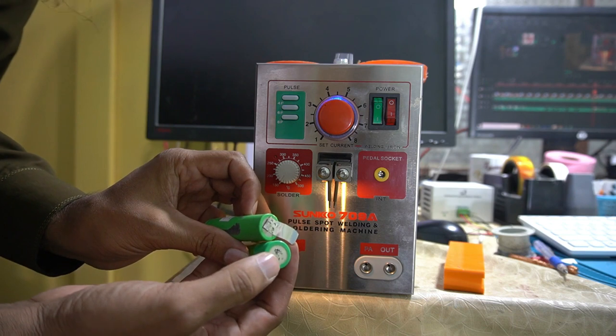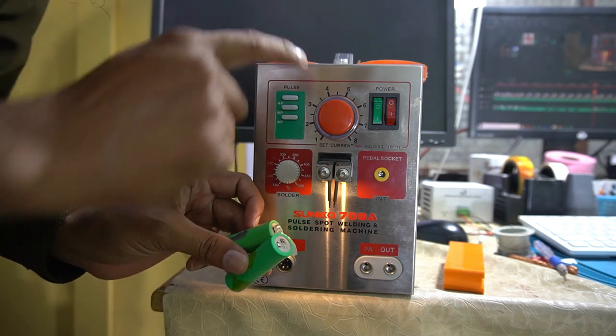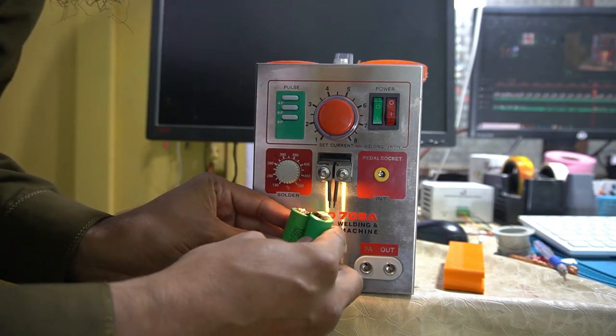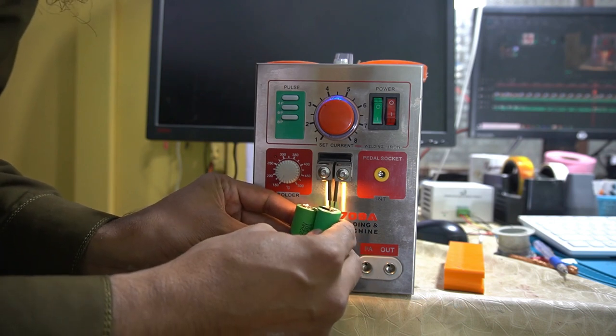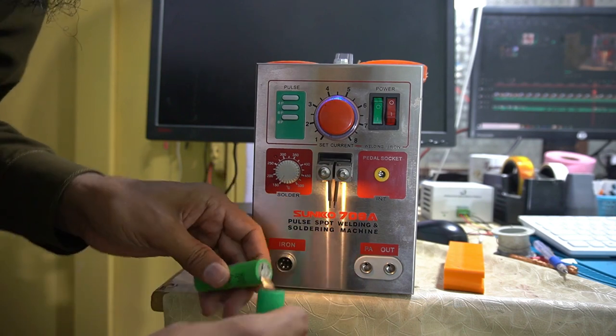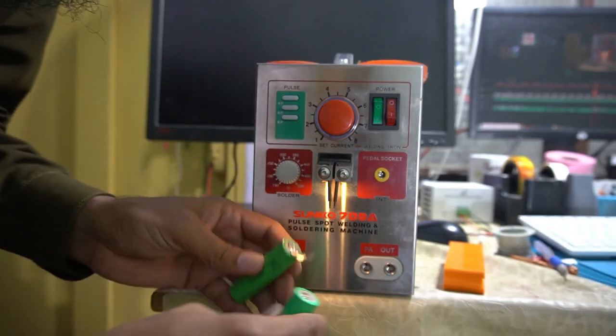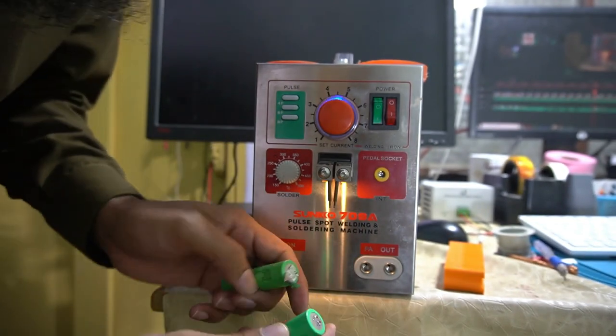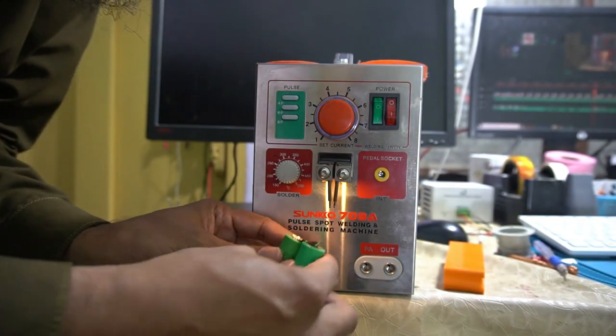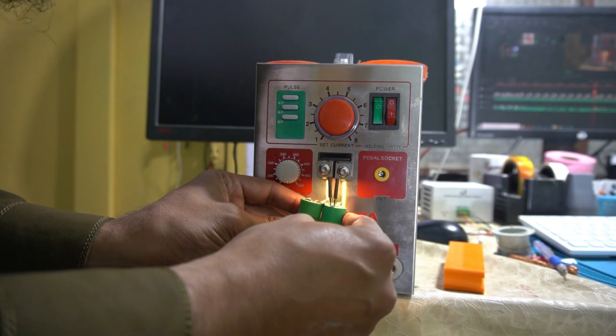When we keep the weight here, then we can't get the nickel strip properly. These are the ones that are wrong. I will show you the way to weld. Because it doesn't have a good shape, you have to adjust for a good shape.